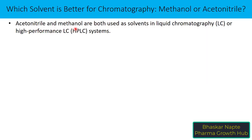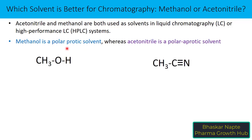Acetonitrile and methanol are both used as organic solvents in liquid chromatography, especially for reverse phase liquid chromatography. Methanol is called a polar protic solvent. Why is methanol polar? Because it is a polarized compound due to the presence of a highly electronegative atom like oxygen, which creates a slightly negative charge on oxygen and a slightly positive charge on hydrogen. So, methanol is a polar solvent.